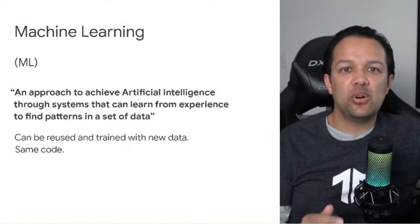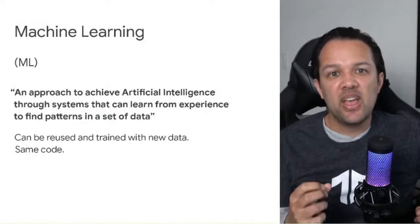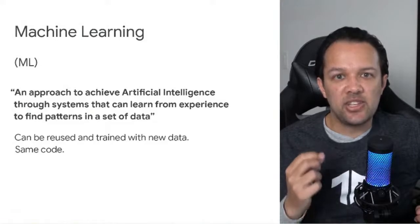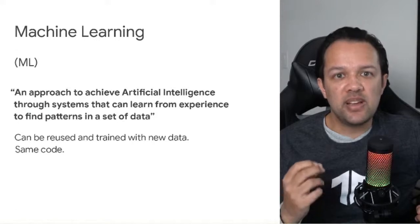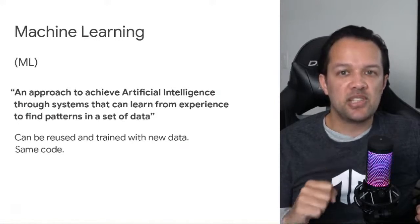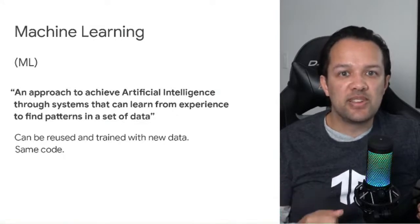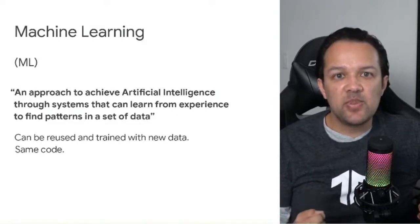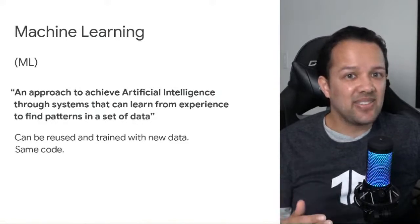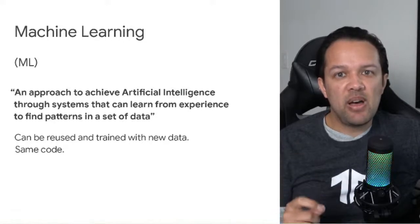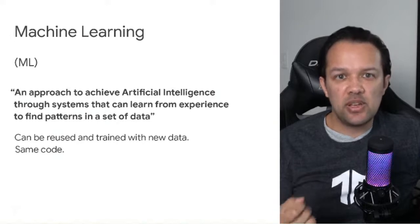Next up, we have machine learning, or ML for short. This is at the implementation level — the actual program we can create that learns from training data to find patterns, and can then classify previously unseen examples in the future. Machine learning is an approach to achieve AI, and the key thing is that these systems, once programmed, can be reused. If I create an ML system that recognizes cats, I can use the same code without modification to recognize dogs, just by feeding it different training images.